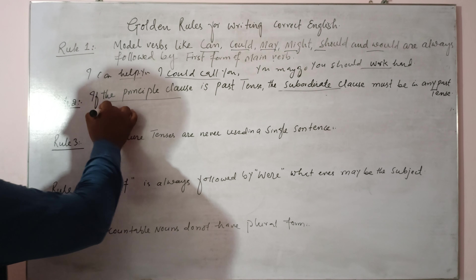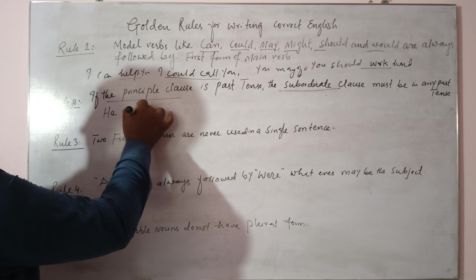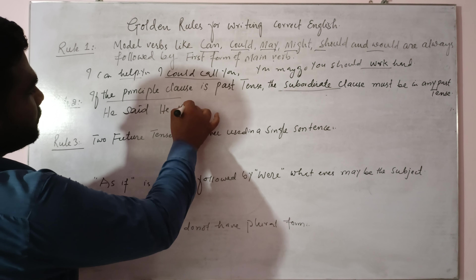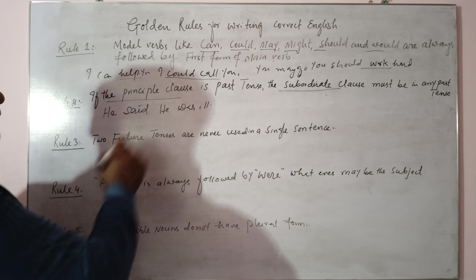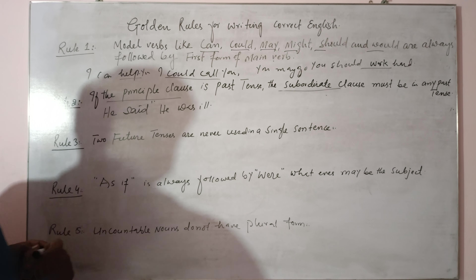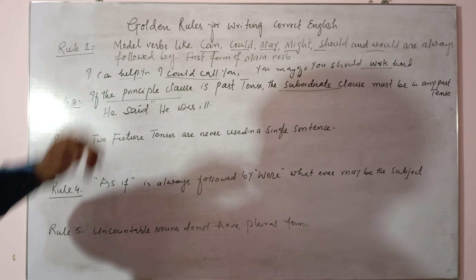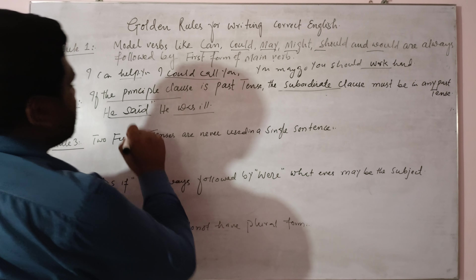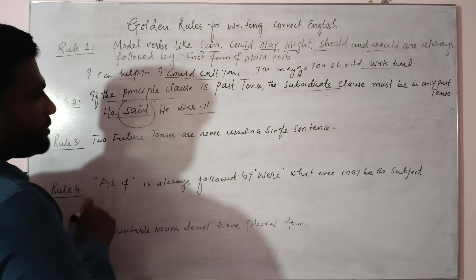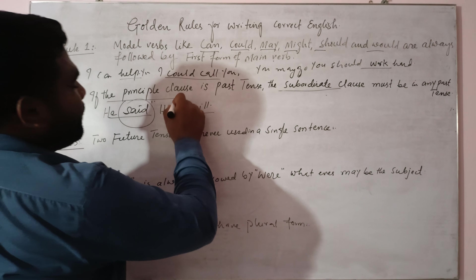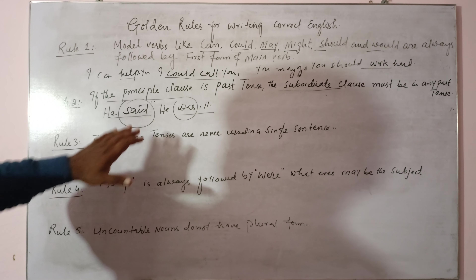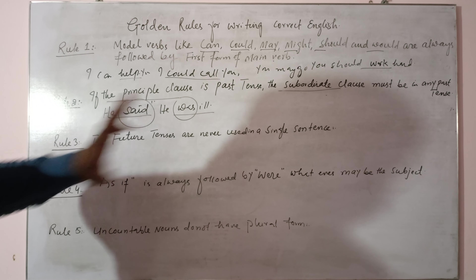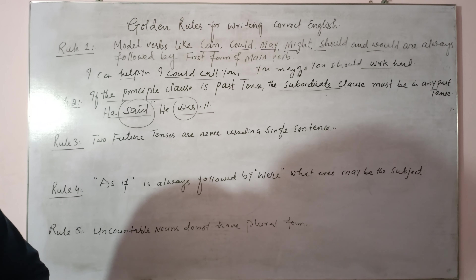For example: 'He said he was ill.' Us ne bataya ke woh bimar tha. Yahan principal clause hai aur yeh subordinate clause hai. Maine 'say' ka second form 'said' istemal kiya aur yahan past 'was' istemal kiya — dono past tense mein hain.